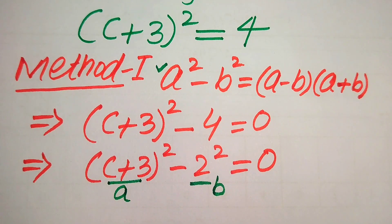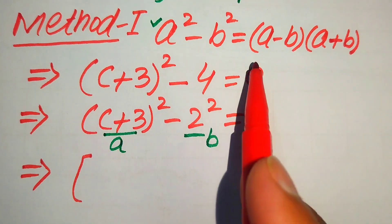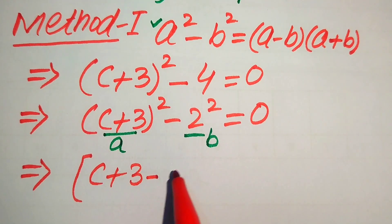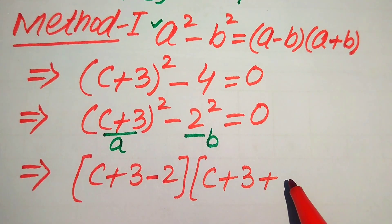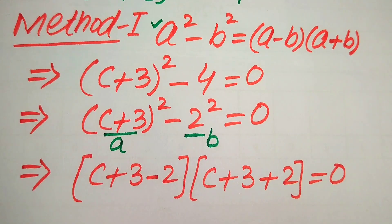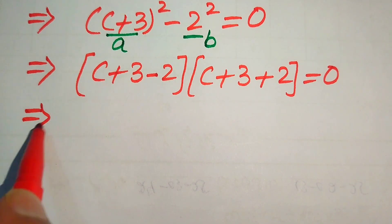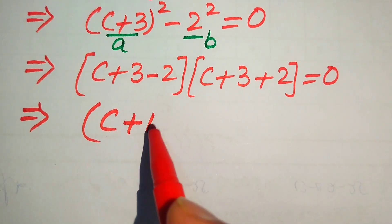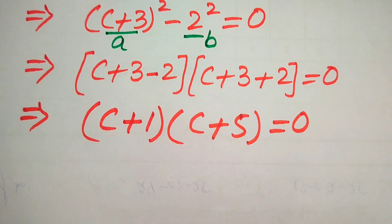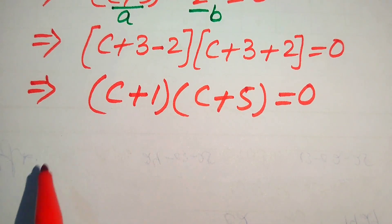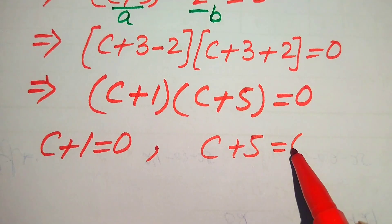We put these two values of a and b into the right-hand side of the formula. This gives us (a - b)(a + b), where a = (c + 3) and b = 2. So the first factor is (c + 3 - 2) and the second factor is (c + 3 + 2), which equals 0. Simplifying: (c + 1)(c + 5) = 0. We split into two cases: c + 1 = 0 and c + 5 = 0.